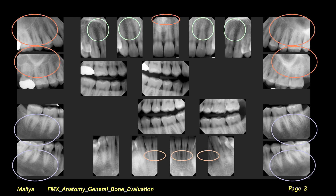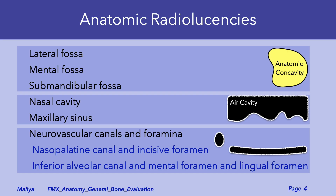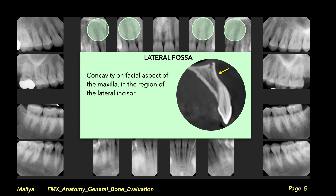At first glance you will note that there are certain areas within these images that appear relatively radiolucent. These areas are anatomic radiolucencies and can be considered in three broad groups: bone concavities, air cavities, and neurovascular bundles or canals. Now let's review those anatomic radiolucencies in more detail.